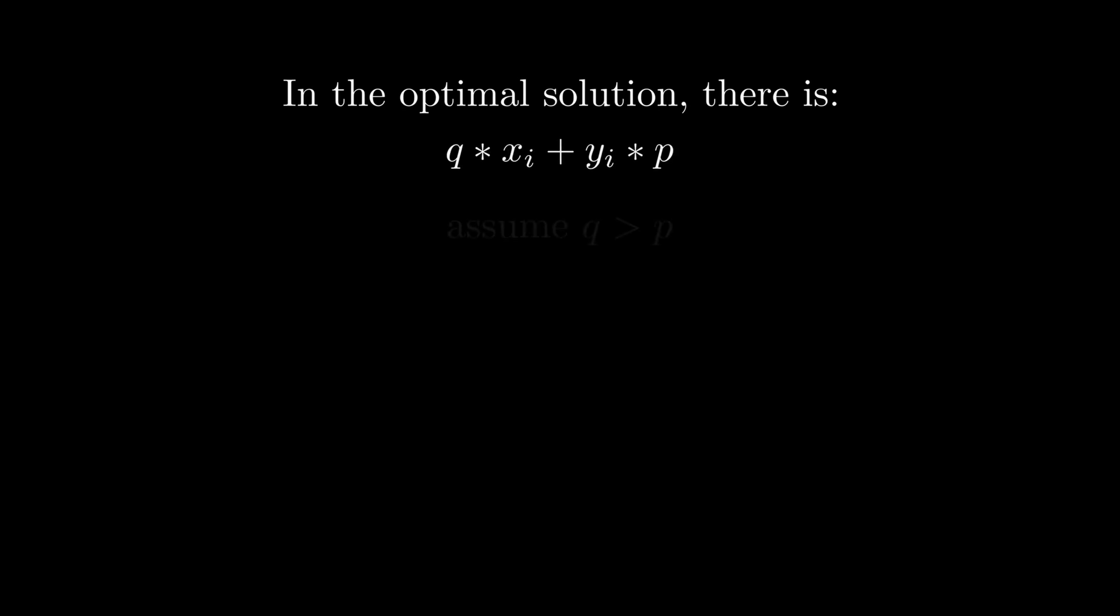Let's look at the expression that we have to minimize. Since xi and yi are related, let's just take a look at some two consecutive terms of this expression. Assume in the optimal solution there is something like q times xi plus yi times p. Without loss of generality, assume q is larger than p. Of course, if it's the other way around, we can just flip them and there's a symmetric argument. Now, since q is larger than p and xi plus yi is ai, so it's fixed, we can see that we want xi to be as small as possible because we don't want many qs because q is the maximum. And we want yi to be as large as possible because we want more small things to minimize the sum.